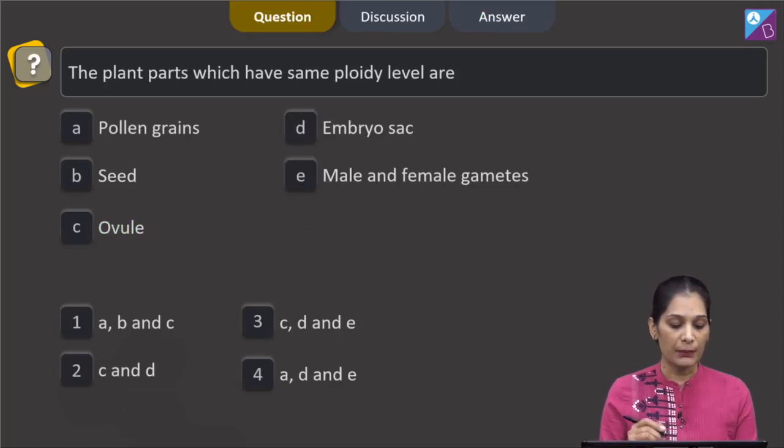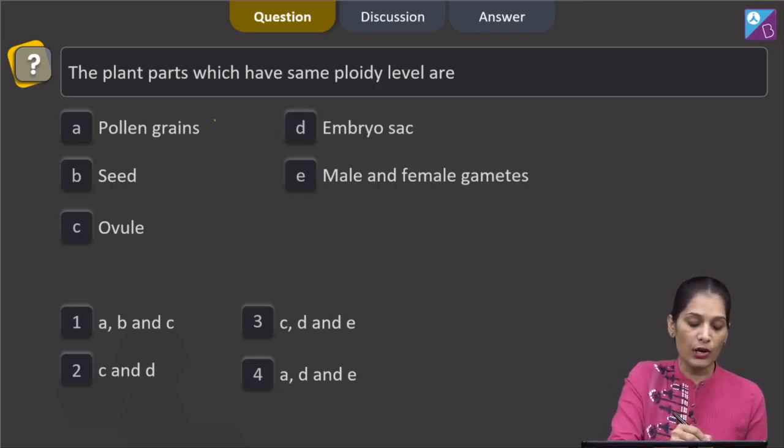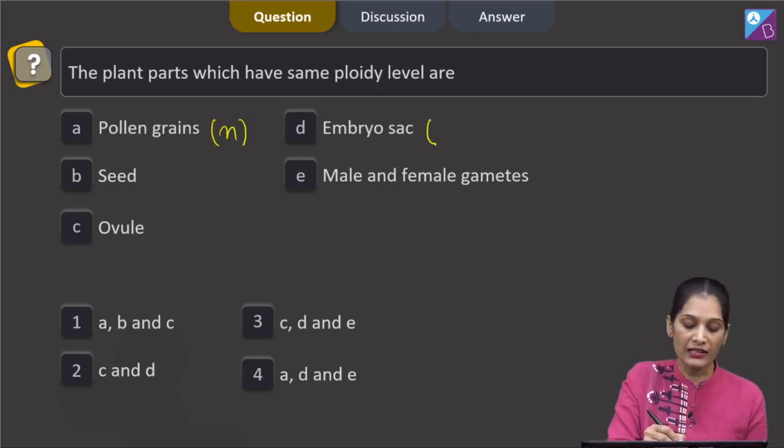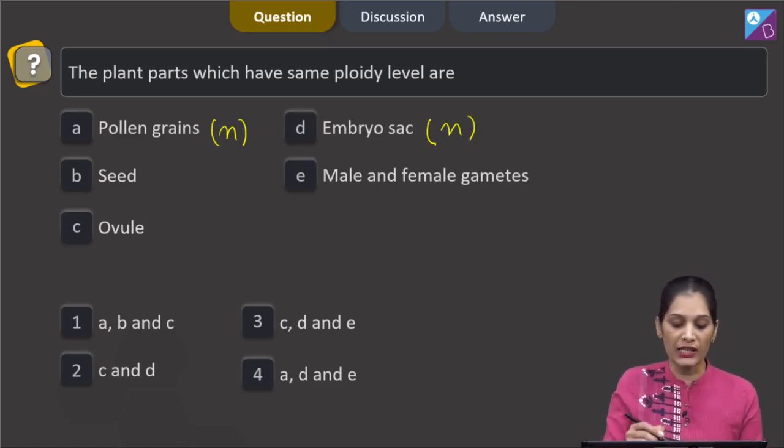This question says that the plant parts which have same ploidy level are pollen grains, seed, ovule, embryo sac, male and female gametes. When we talk about the ploidy level we have to see whether this structure is haploid, diploid or triploid and so on. Here we can see the pollen grains they are haploid in gymnospermic and angiospermic plants. The embryo sac, it is again haploid.